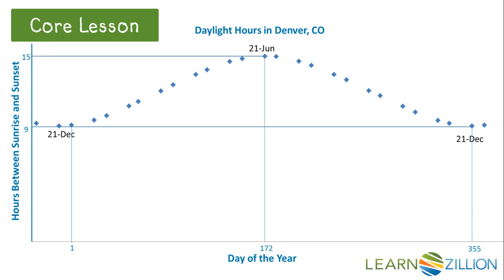The period is 365 days, so B is 2π over 365. June 21st is the longest day of the year, and we can see that there are 15 hours of daylight. December 21st, the shortest day, has approximately 9 hours of daylight. The amplitude is half of the difference of those, or 3.